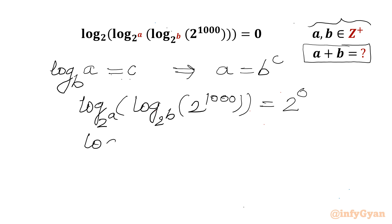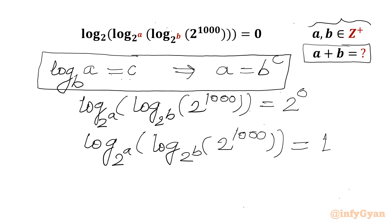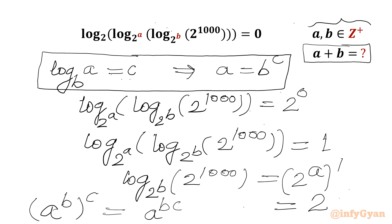So log base 2^a of log base 2^b of 2^1000 equals 1. Again applying the same log property, we get log base 2^b of 2^1000 equals (2^a)^1. Using the property that (a^b)^c equals a^(b·c), we can write the RHS as 2^a.